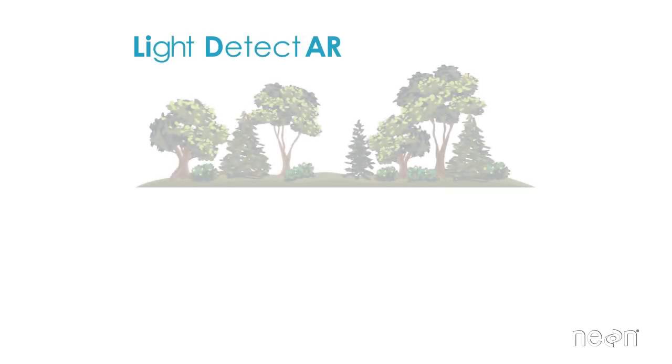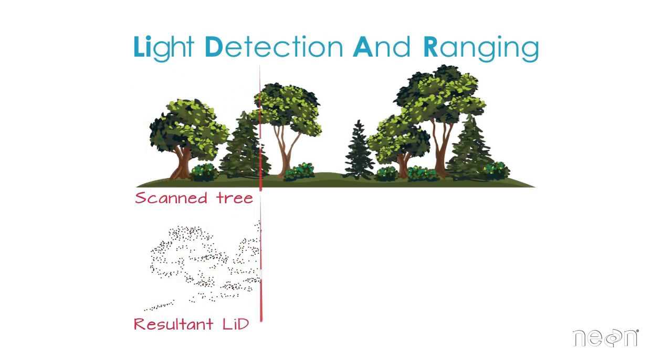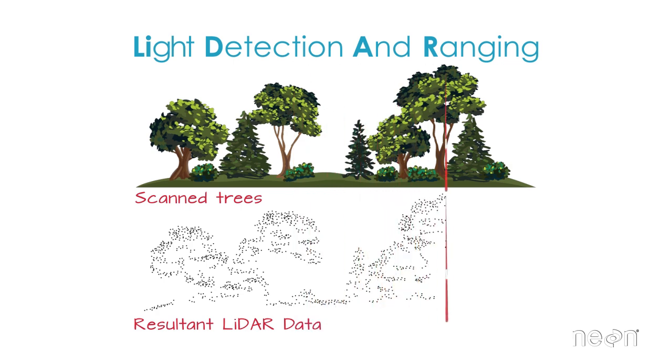LIDAR stands for light detection and ranging. A LIDAR system uses light energy emitted from a laser to scan the Earth's surface and record the heights of objects, like trees and buildings, on the ground.